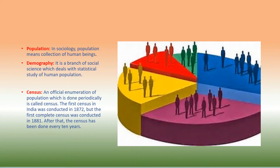Population: in sociology, population means collection of human beings. Demography: it is a branch of social science which deals with statistical study of human population.